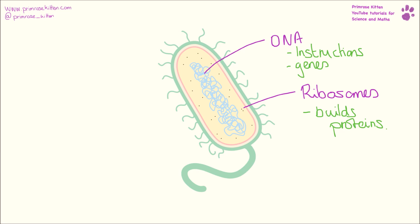We have on the bottom here the flagella. It may not come as a surprise because its function is kind of rather obvious when you think about it. It's a little bit like a sperm — it kind of swings around in a propeller movement and it's responsible for the movement, swimming, or swarming of the bacteria. It basically helps bacteria get around, like a little fish's tail used for swimming.